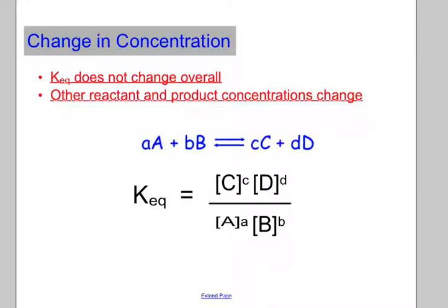The first one we're going to talk about is changing the concentration of either our reactants or our products. Remember, our Kc is a ratio — it's a fraction, products over reactants. So if you change your reactants or products, you're messing up the ratio. The system will shift to reestablish that ratio — it'll try to keep Kc constant. So the Kc does not change when you change concentrations; instead, the equilibrium will shift temporarily to relieve that stress.